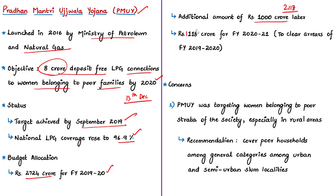The report also says that the Pradhan Mantri Ujwala Yojana scheme is no longer in existence. What we can infer from this data is that the present allocation will be used to meet the arrears of the amount sanctioned for financial year 2019-20. The committee has expressed its concerns over closing the scheme. Pradhan Mantri Ujwala Yojana targeted women from poor sections — those belonging to SC and ST households, Antyodaya Anna Yojana beneficiaries, and forest dwellers, especially in rural areas.